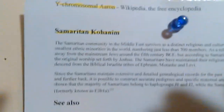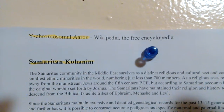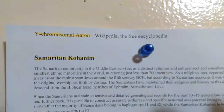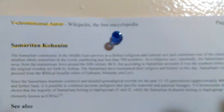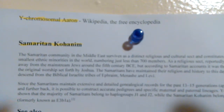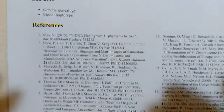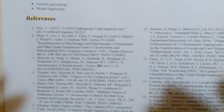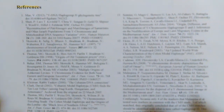Moving on, I want you to get on Wikipedia and look at this research here — Y chromosome Aaron. The first high priest of the Israelites, the brother of Moses. There's a worldwide study done on a Samaritan Kohenium gene. There are references at the very bottom — just scroll down and you'll see all the people who signed off on this research.